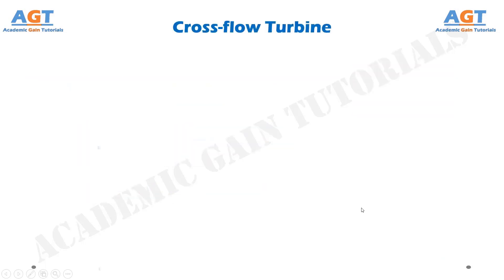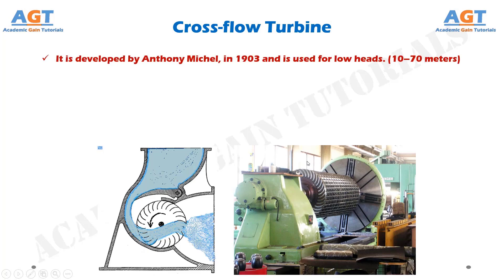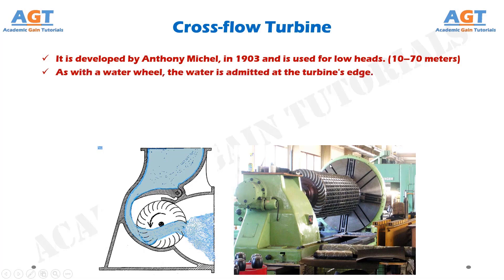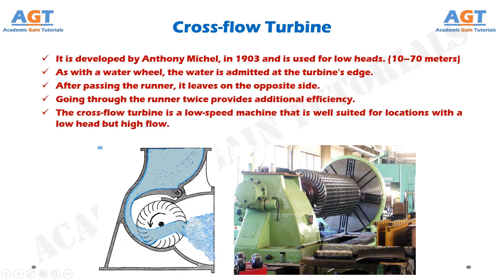The cross flow turbine is another type of impulse turbine. It was developed by Anthony Michel in 1903 and is used for low heads of 10 to 70 meters. As with the water wheel, the water is admitted at the turbine's edge. After passing the runner, it leaves on the opposite side. Going through the runner twice provides additional efficiency. The cross flow turbine is a low speed machine that is well suited for locations with a low head but high flow.